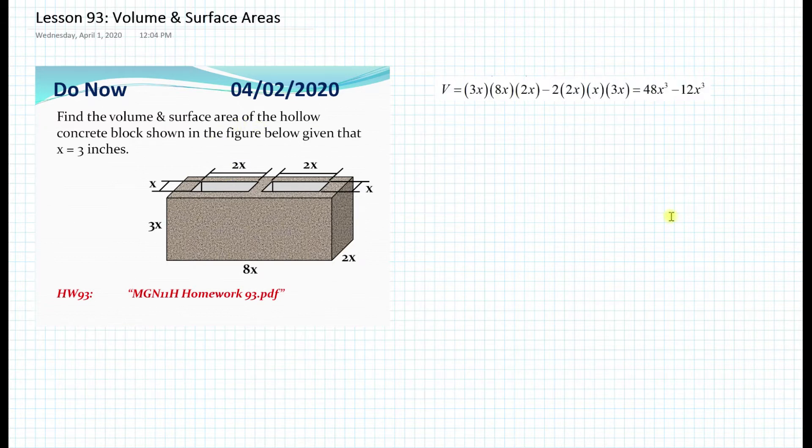So for the volume, we can just simply write 3x times 8x times 2x, which will give us the volume of the entire concrete block without the empty spaces inside.